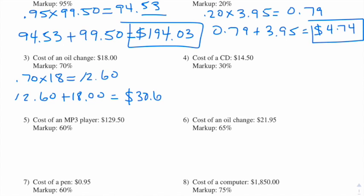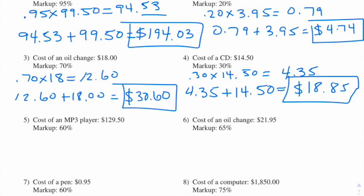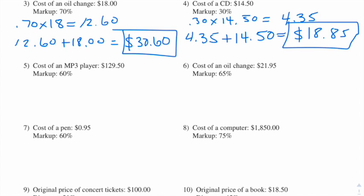Number four: the cost of a CD is $14.50 and the markup is 30%. So we're taking 30% of $14.50 — that's 0.3 times 14.5 — and we end up with $4.35. So we do $4.35 plus the original amount of $14.50 and we get $18.85.